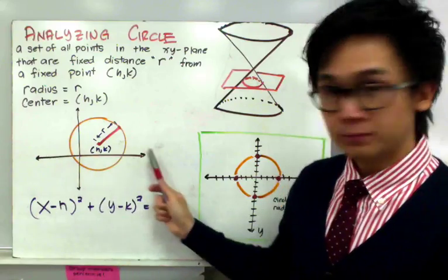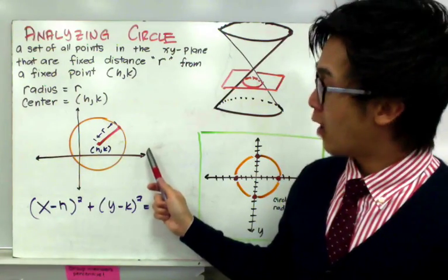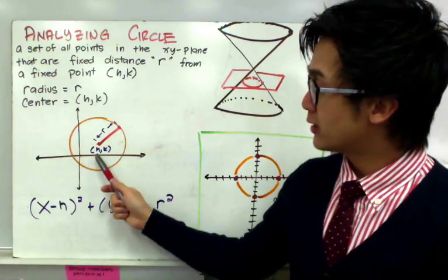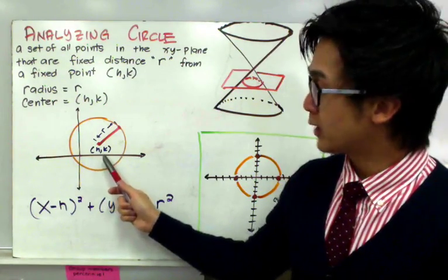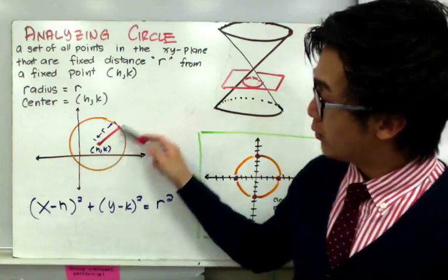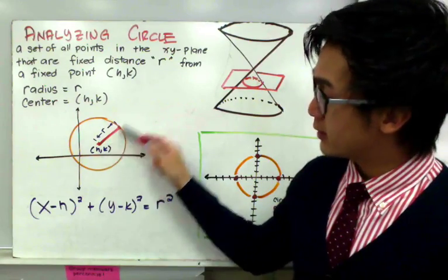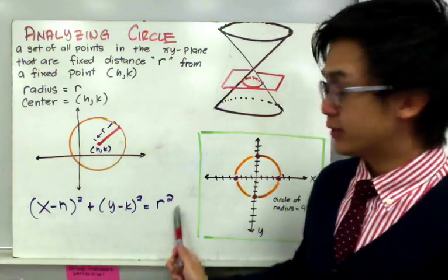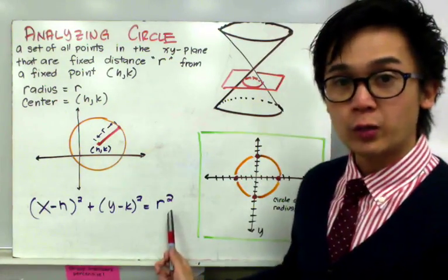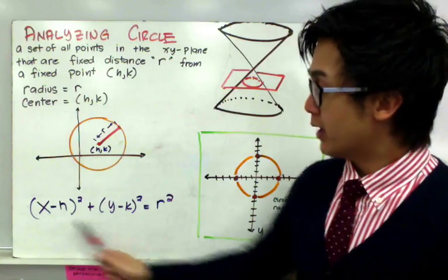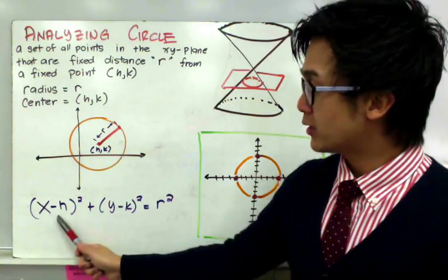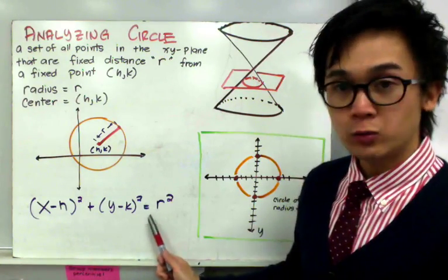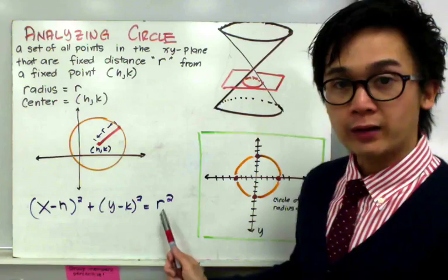On the xy-plane, the center is represented by the variable (h, k) and the radius is r. This is the standard equation of the circle we are going to use today: (x − h)² + (y − k)² = r².